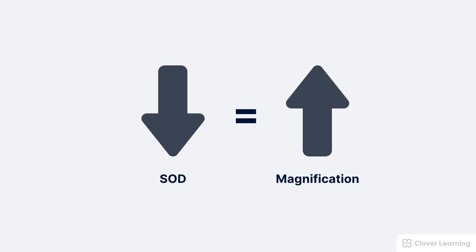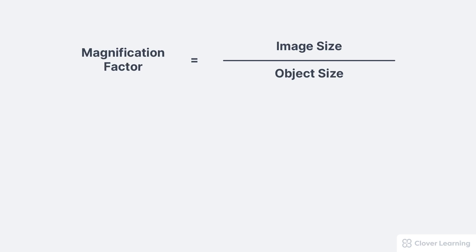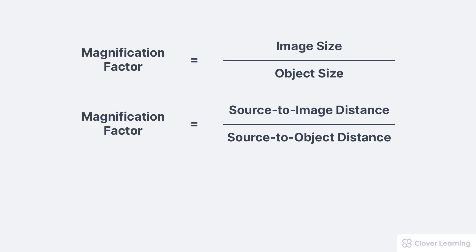We can quantify the amount of magnification using the magnification factor formula. The magnification factor, or MF, equals the image size divided by the object size. Magnification factor is also equal to the SID divided by the SOD. So what does the magnification factor tell us? It tells us how much bigger the image of an object is compared to the actual size of the object.